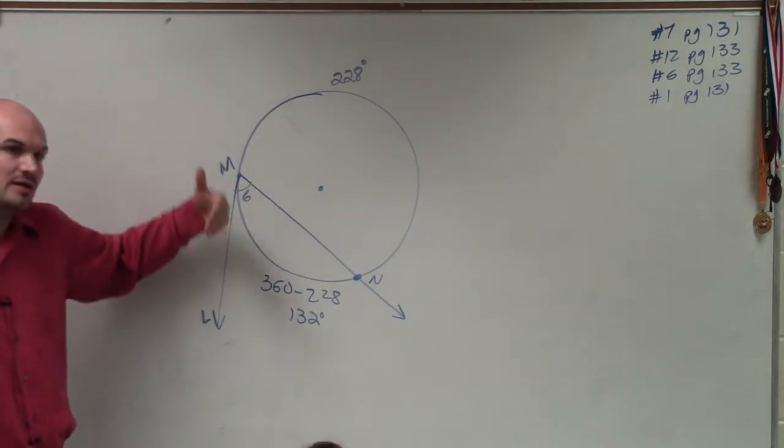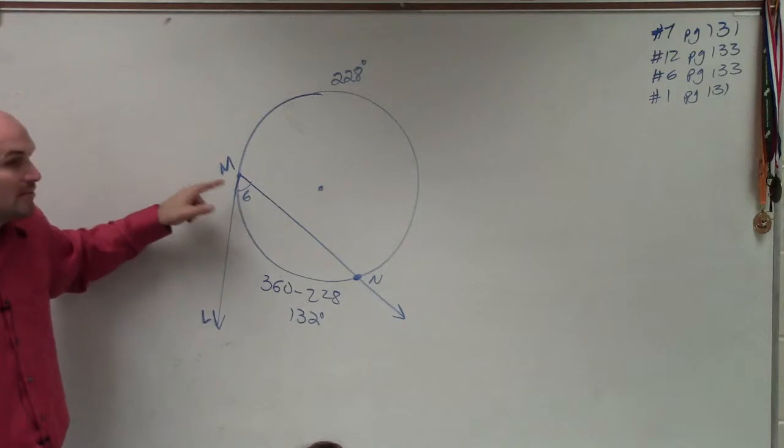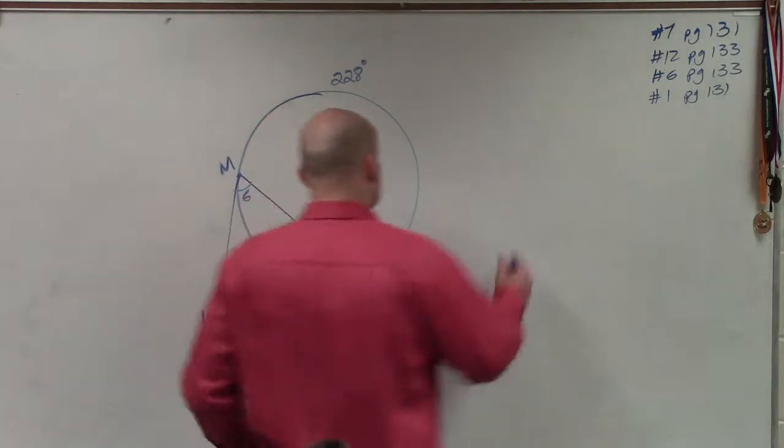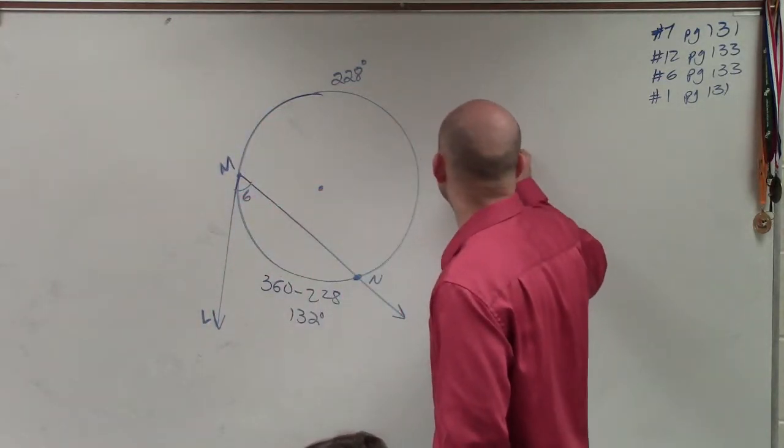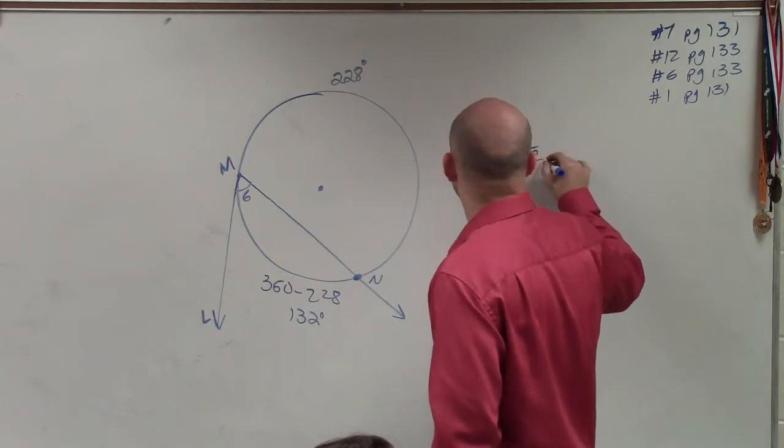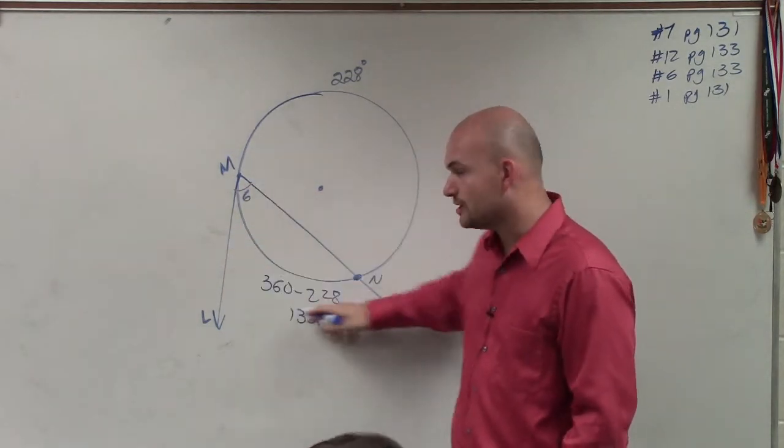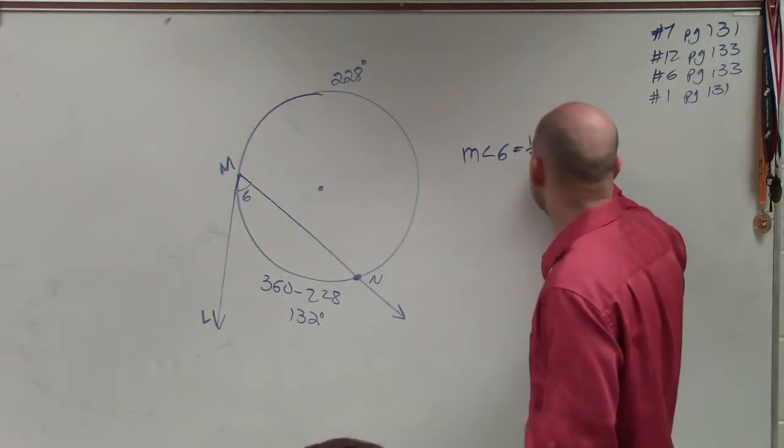And if you remember, the definition or the formula for an inscribed angle is measure of angle 6 equals 1 half its arc, which would be from m to n.